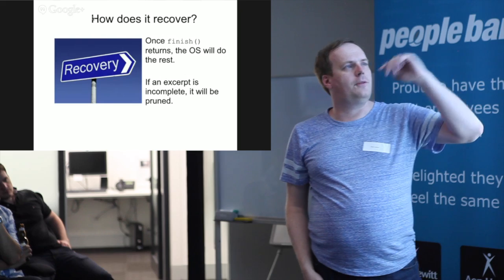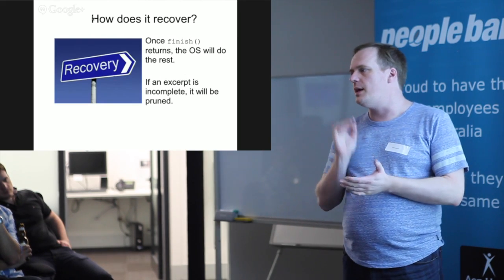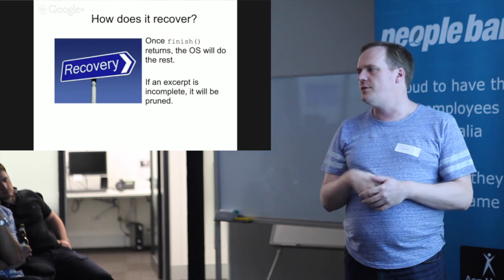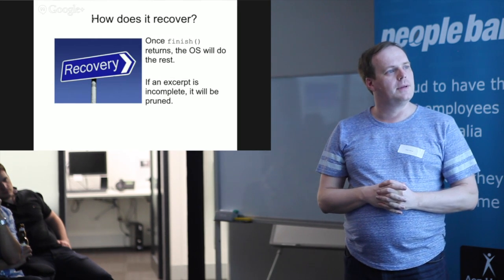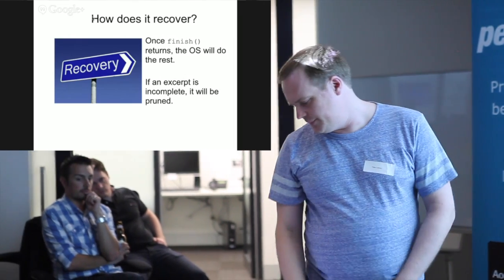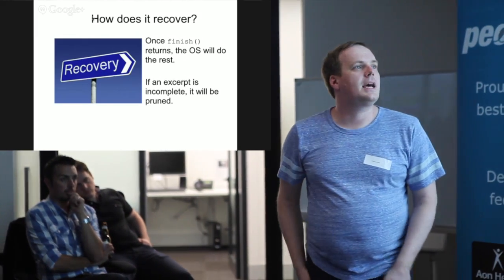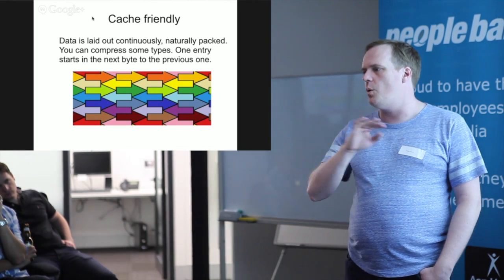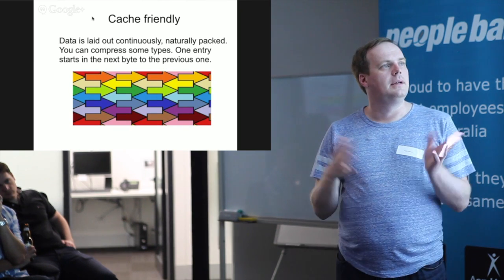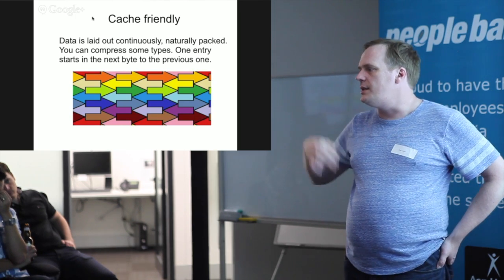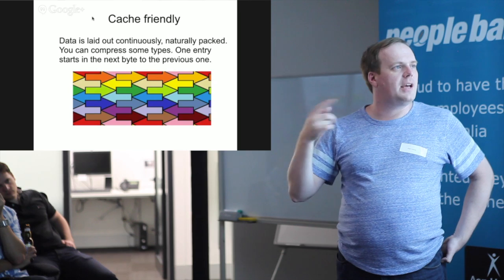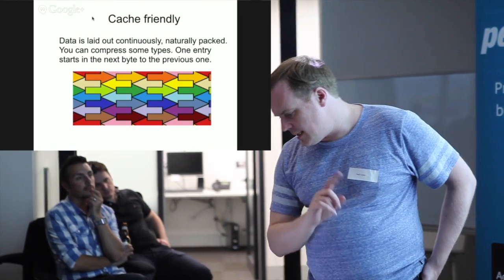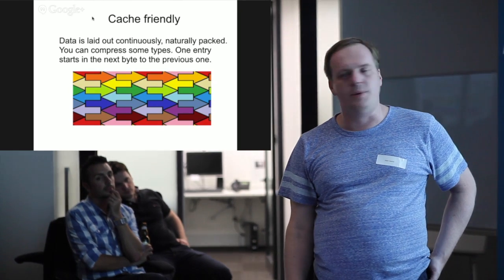If an exception occurs or it fails before finish is called, data won't be written. There are two files — a data file and an index file — and without the entry in the index file, on recovery it just assumes it's not there and overwrites it; incomplete messages are pruned. Chronicle is also cache friendly: the first byte of a message appears immediately after the last byte of the previous message, so it's all continuous in memory with no headers. This makes best use of caches, which are designed to do vector operations efficiently — reading and writing sequentially through memory.